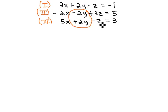Similarly, the last two equations have negative 2y and positive 2y. Those would eliminate quickly as well, so let's try and eliminate the y's twice.